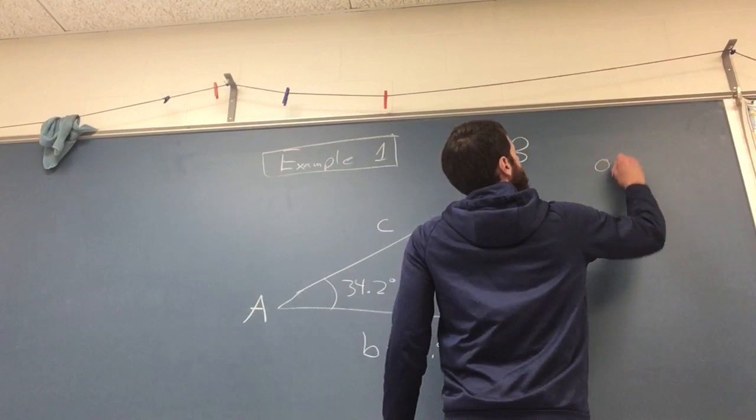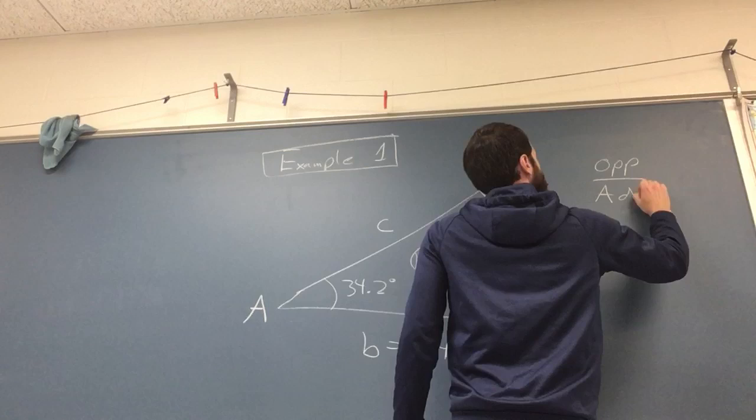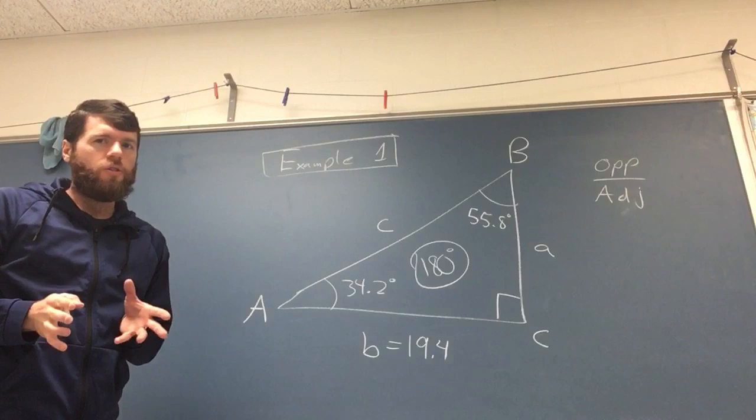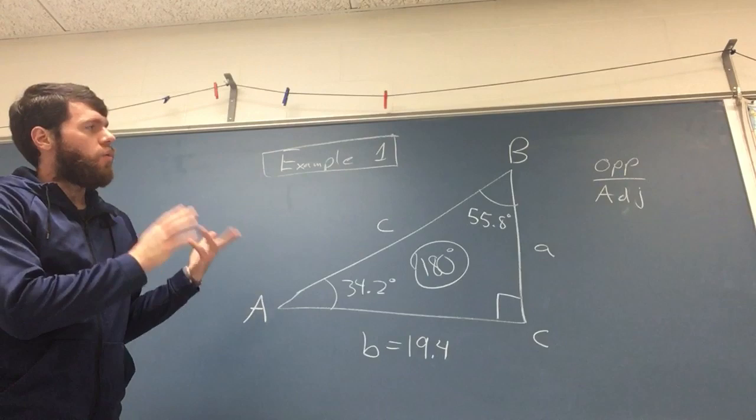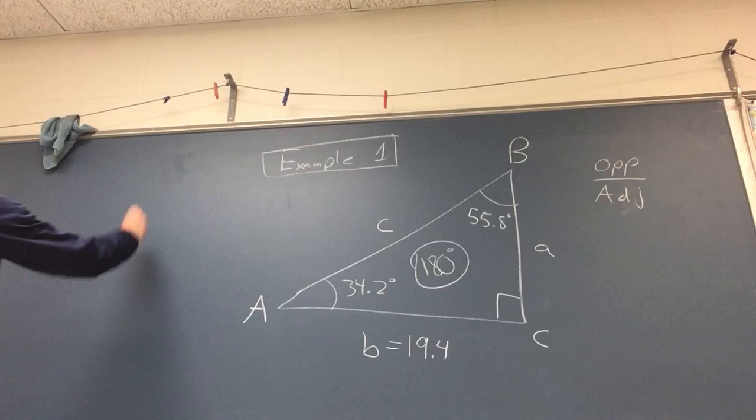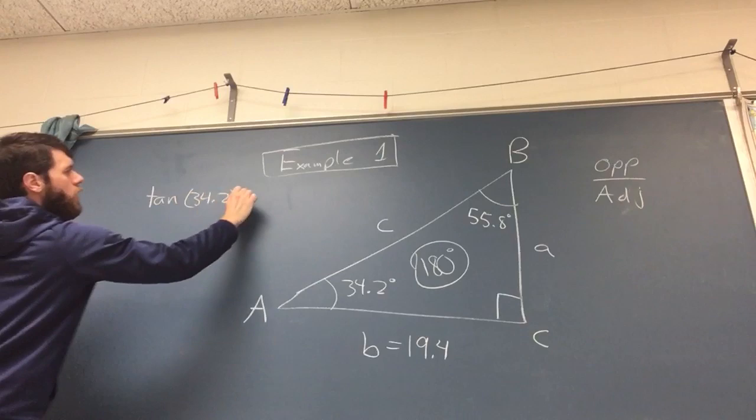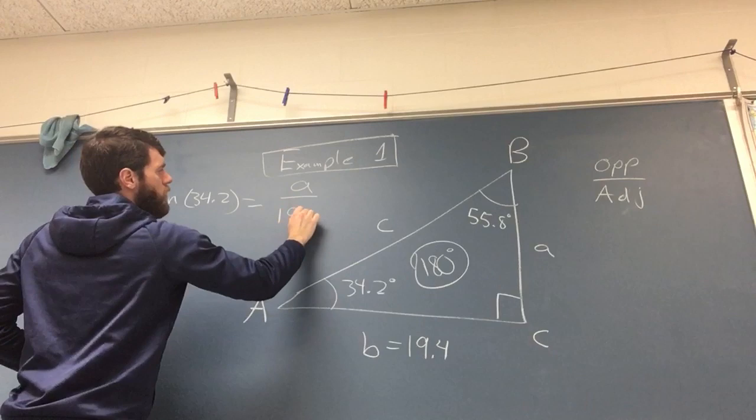Let's see, opposite and adjacent. Which trigonometric function uses opposite and adjacent? There's only one: it's opposite over adjacent, and it's equal to tangent. So what we can properly construct is the tangent of 34.2 equals the unknown opposite, which we call A, over the known adjacent, which we call 19.4. And then we can solve this for A.